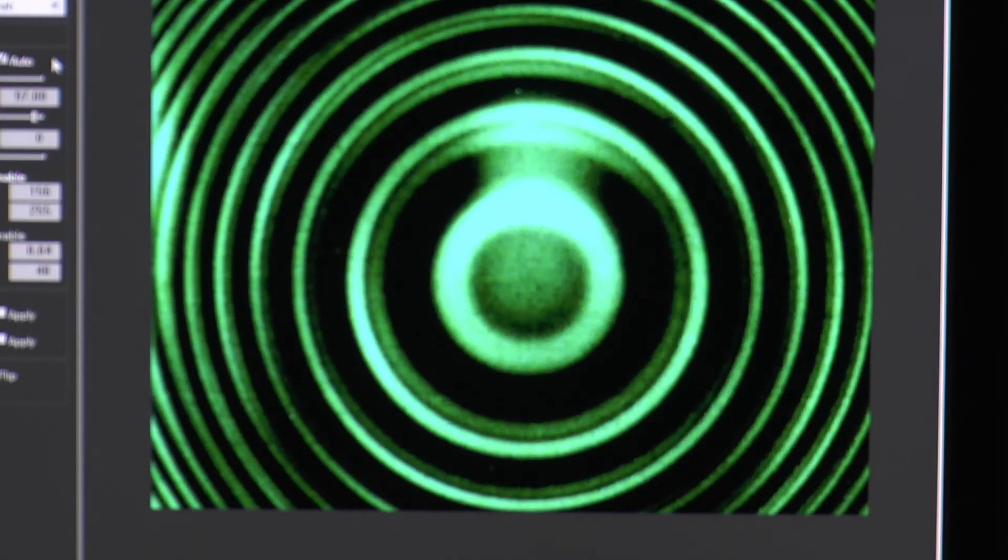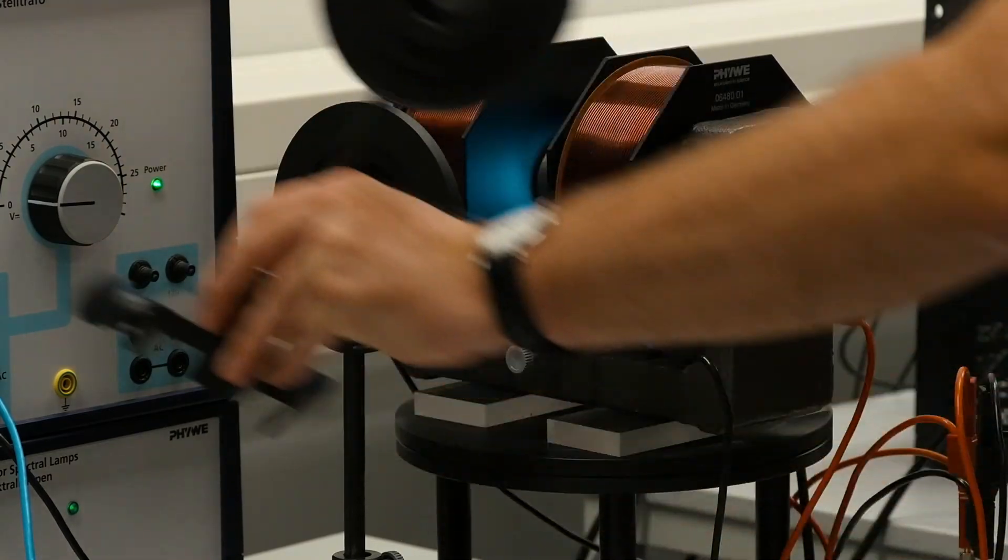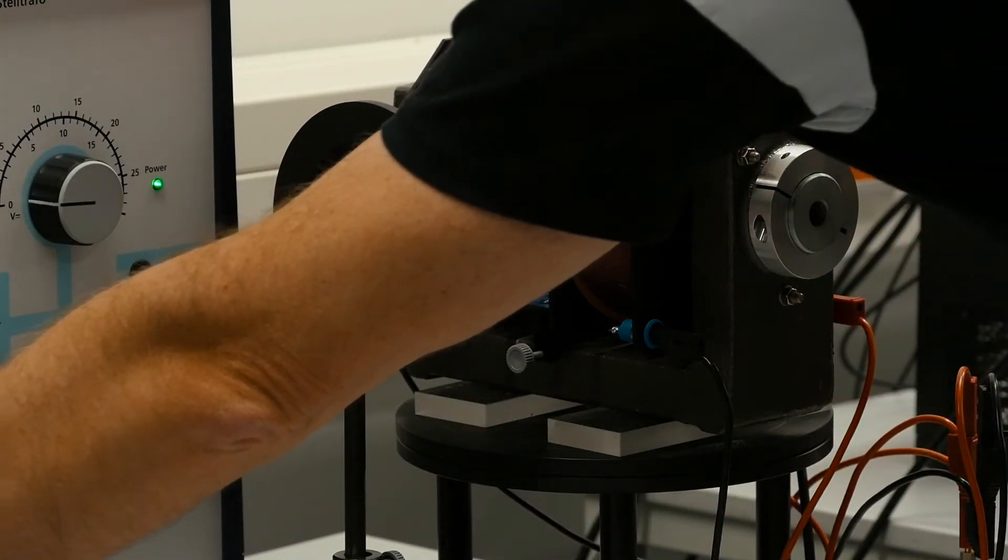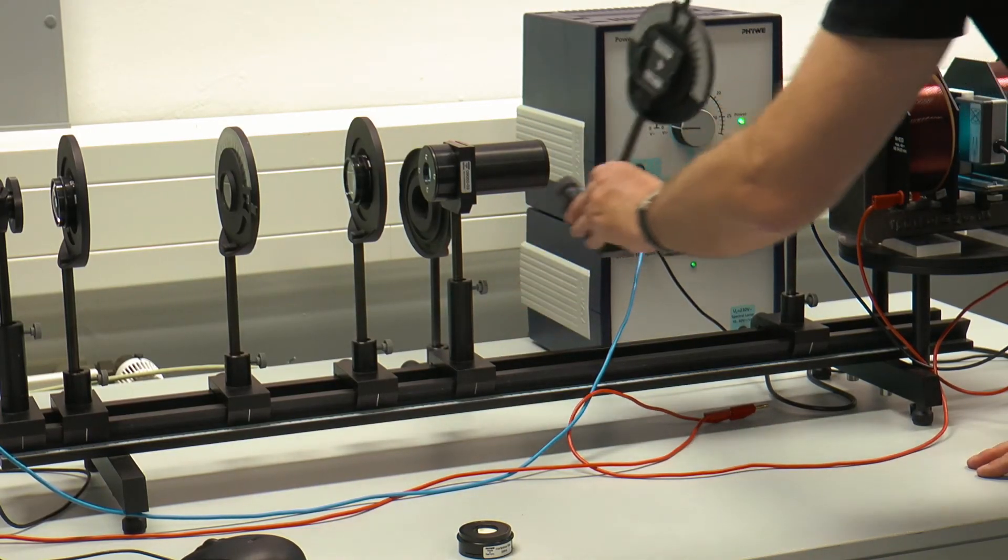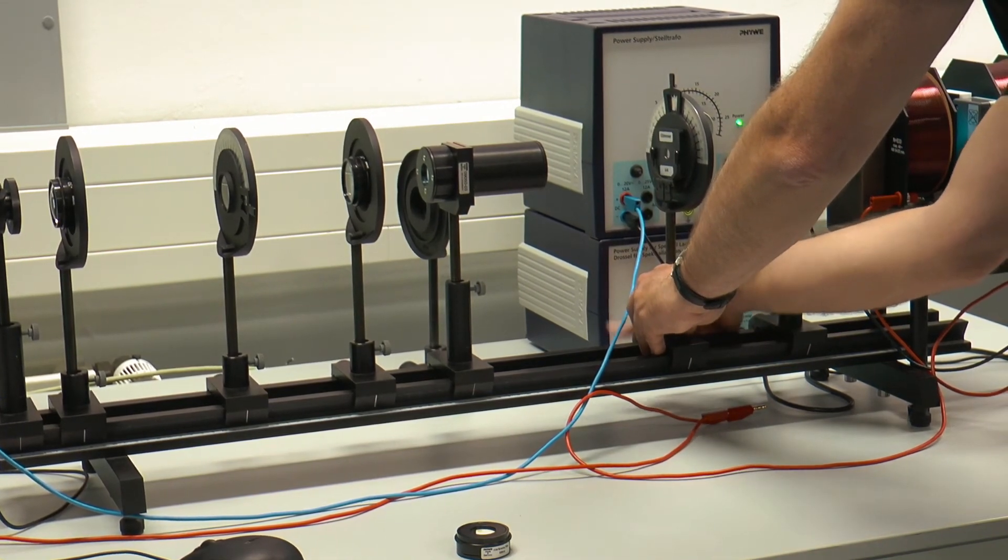Measurement of the polarization of the emitted light in the anomalous longitudinal Zeeman effect. Remove the iris diaphragm and insert the polarizing plate in front of the polarization filter. Turn the magnet so that the spectral lamp can be observed through the poles of the electromagnet.